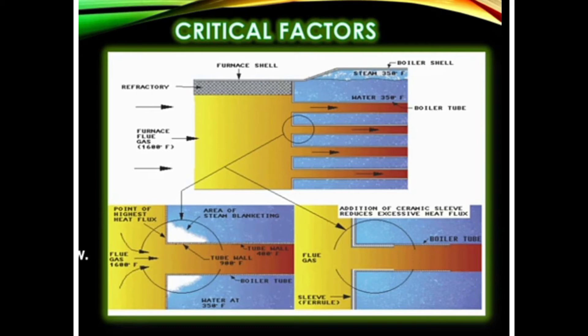We can reduce steam blanketing by using a ceramic sleeve, which reduces the excessive heat flux and prevents the steam blanketing phenomenon that causes failure of the boiler tubes.